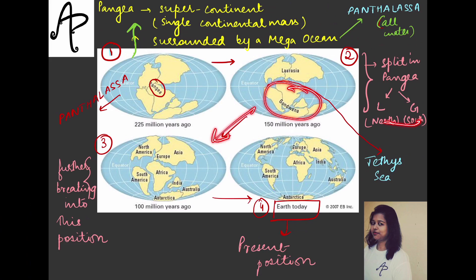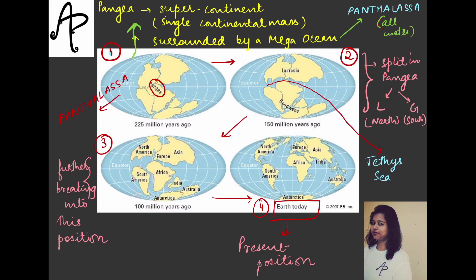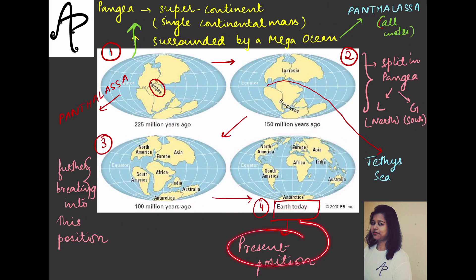Then further, about 100 million years ago, there was further breaking up. It resulted in different continents but with slightly different positions — you can see North America joining with Europe, India here, Australia and Antarctica joining, and South America and Africa very close to each other. And then further they got divided and we see the present position; this is the Earth today.